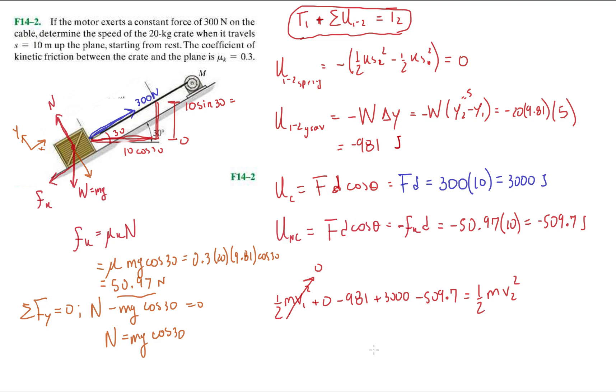All I end up with on the left-hand side is 3000 minus 981 minus 509.7, which equals 1509.3. So v₂ = √(1509.3 × 2 / 20), and I end up with 12.285, so let's say 12.29 meters per second, or just 12.3, whichever you feel more comfortable with.